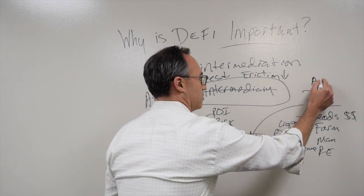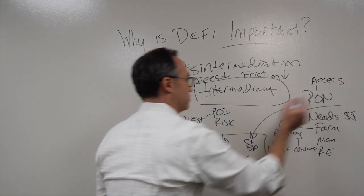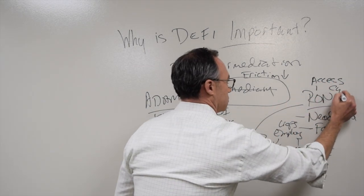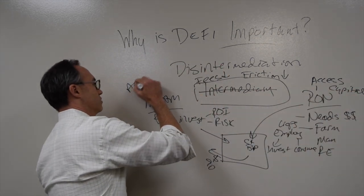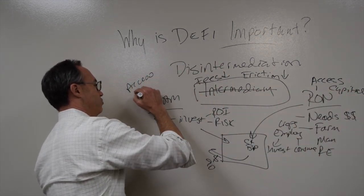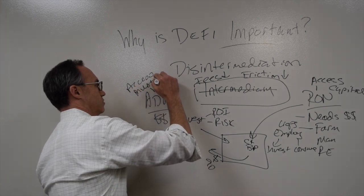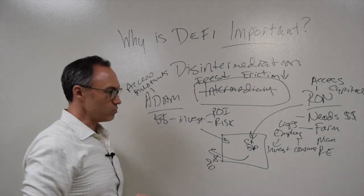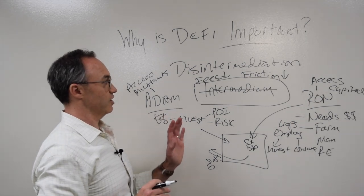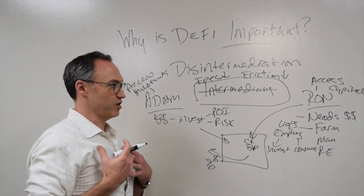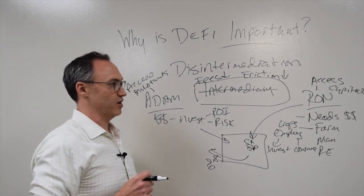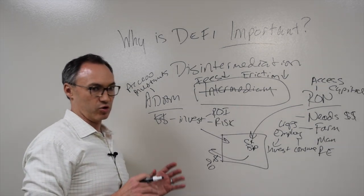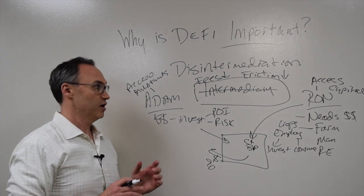This is part of the goal of the decentralized finance world. It increases Ron's access to capital, and it increases Adam's access to investments. Now from a social aspect, that's great. If I'm the type of person, or if Adam's the type of person that says, I want to try to invest in some of these smaller projects around the world and help out, that sounds great.